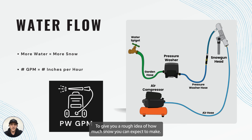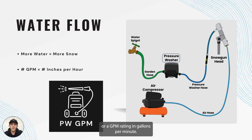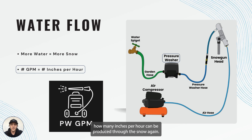To give you a rough idea of how much snow you can expect to make, we're going to want to look at the pressure washer being used in the system. Each pressure washer will have a flow rate or a GPM rating in gallons per minute. This rating is going to tell us approximately how many inches per hour can be produced through the snow gun.